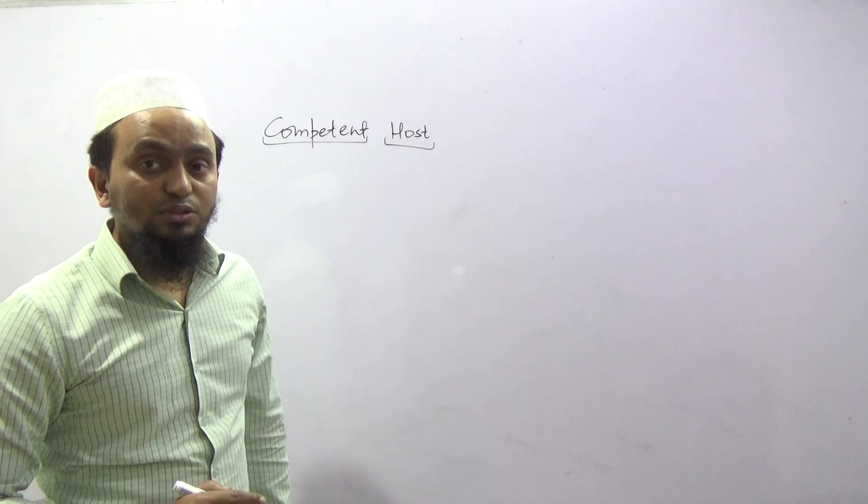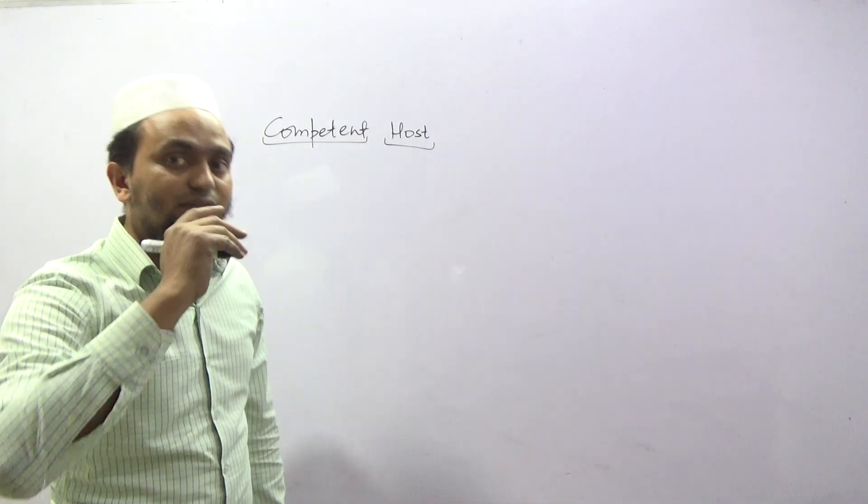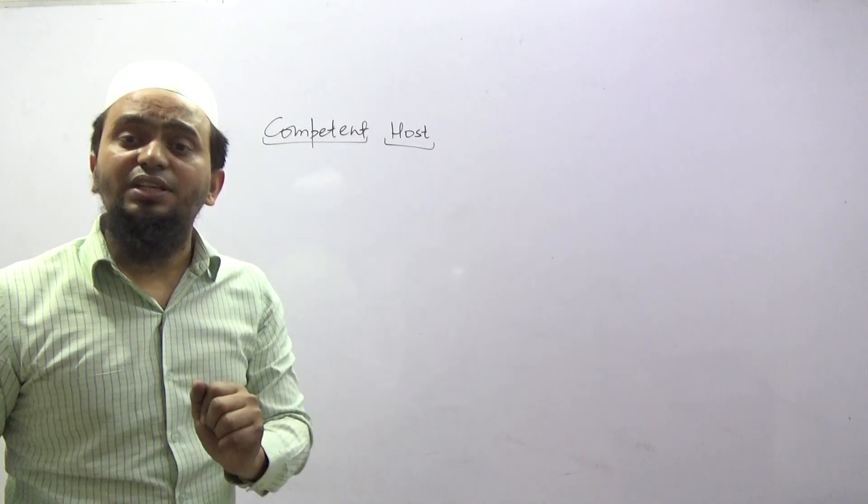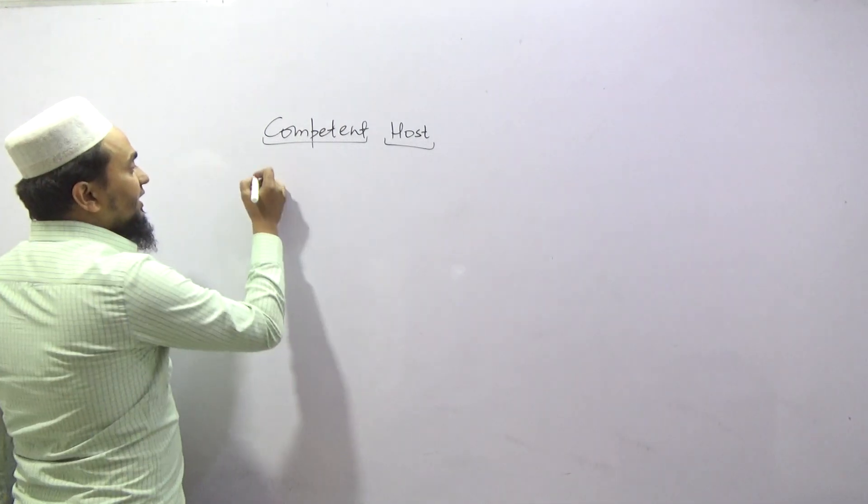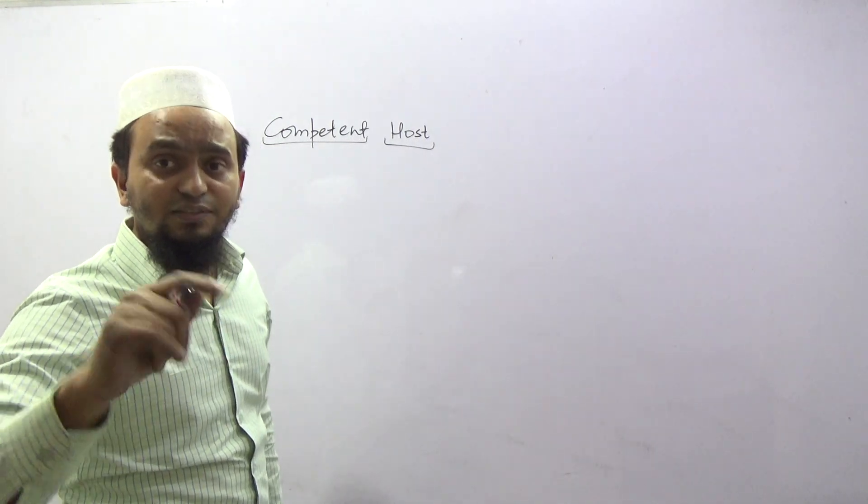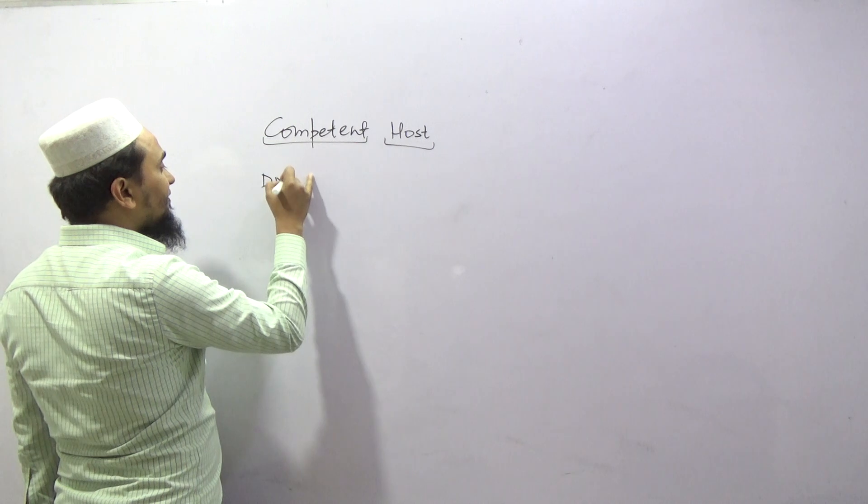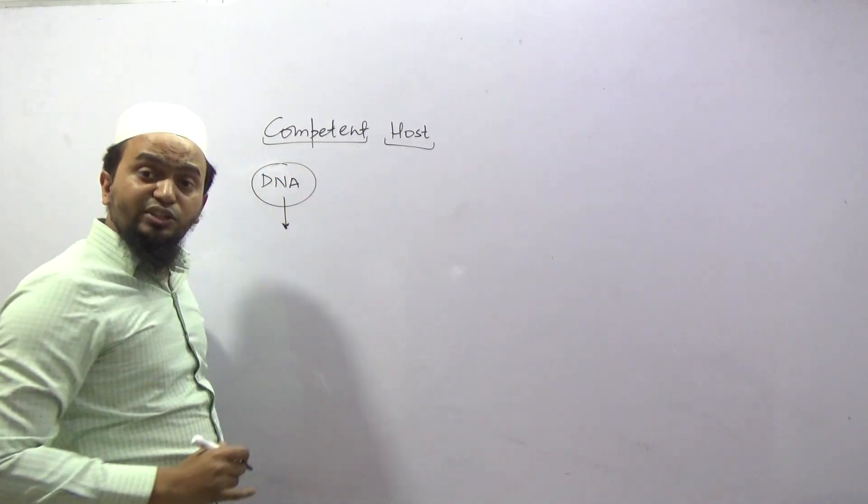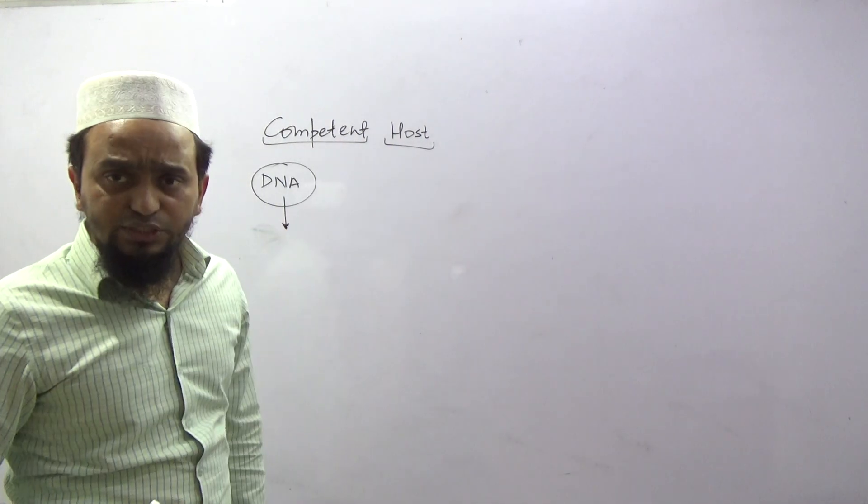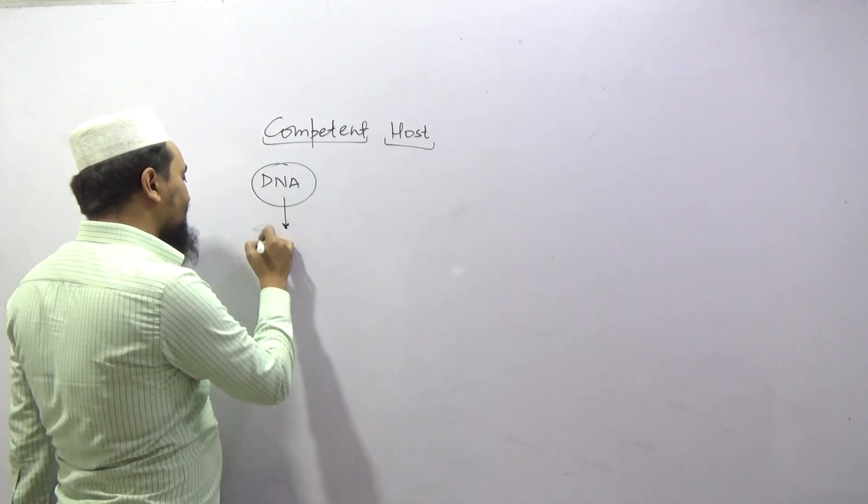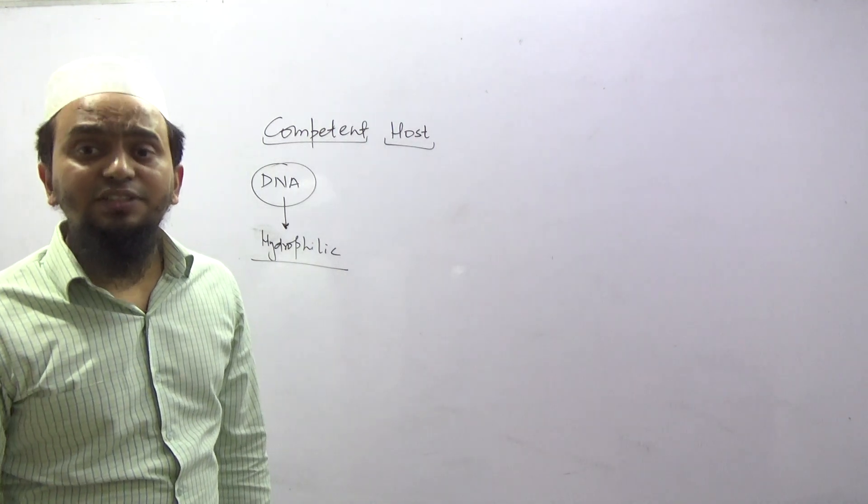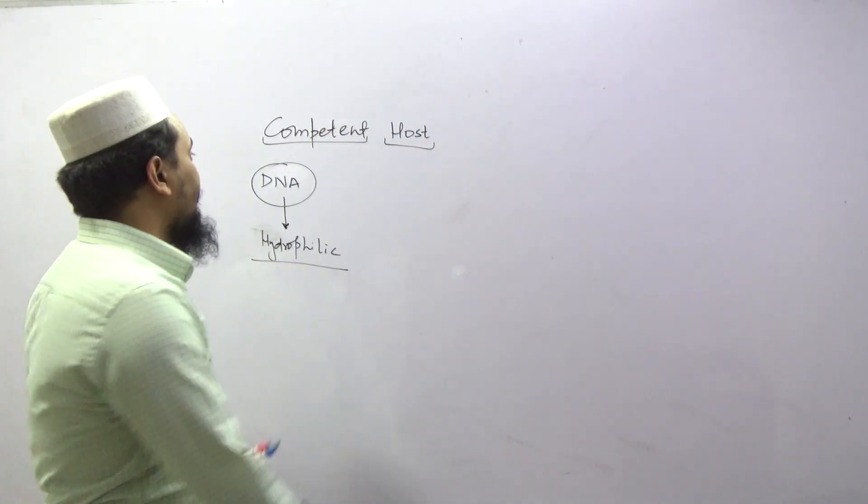So, the gene of interest, what is our competent host? Our host is actually the bacteria, because the host is bacterial. The bacterial DNA - the DNA molecule is an ionic molecule. The DNA is an acidic molecule. Hydrophilic nature. What is DNA? The DNA is an acidic molecule and the DNA is hydrophilic.